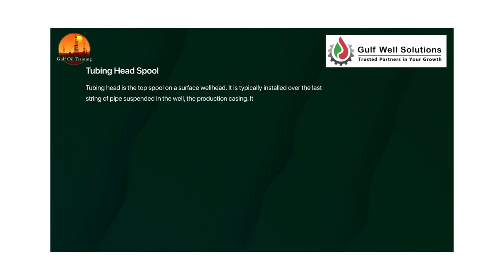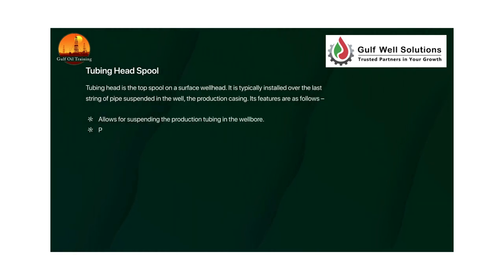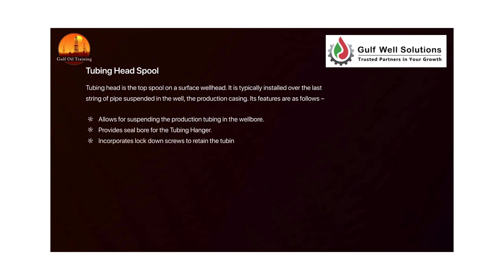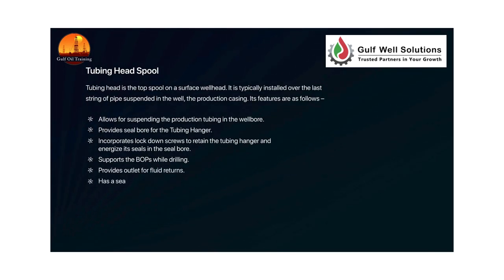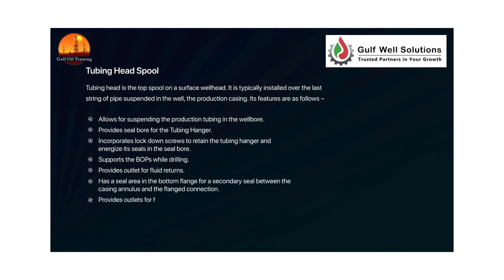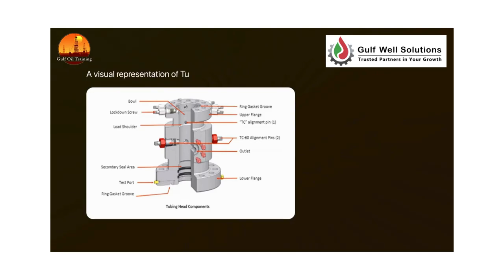The tubing head spool is the top spool on a surface wellhead, typically installed over the last string of pipe suspended in the well — the production casing. Its features include: allows for suspending the production tubing in the wellbore, provides a seal bore for the tubing hanger, incorporates lock-down screws to retain the tubing hanger and energize its seals, supports the BOPs while drilling, and provides outlets for fluid returns. It also has a seal area in the bottom flange for a secondary seal between the casing annulus and the flanged connection.